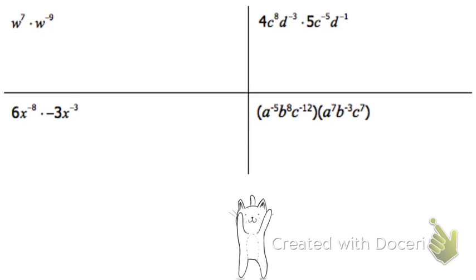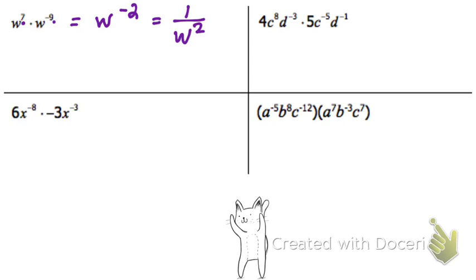Here, when I'm multiplying, remember when you're multiplying, you're adding, so you first multiply them together, so 7 plus negative 9 is negative 2, and then to simplify it, I can change that to 1 over w squared.